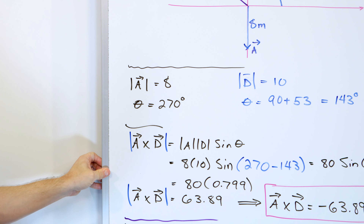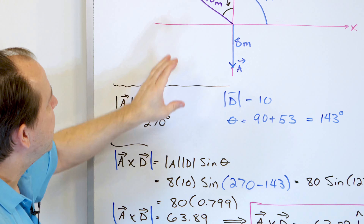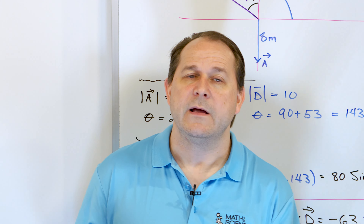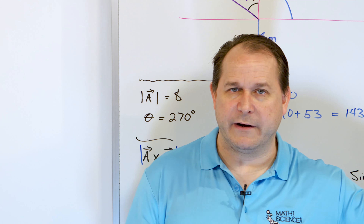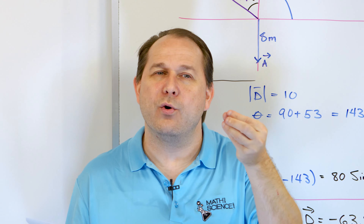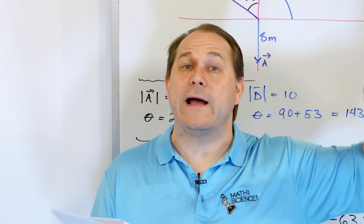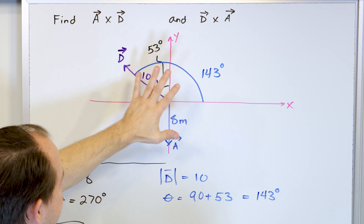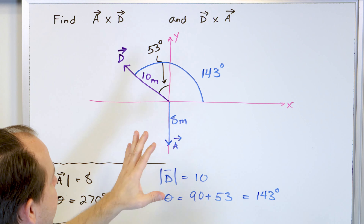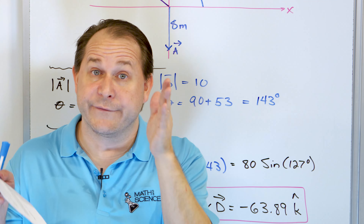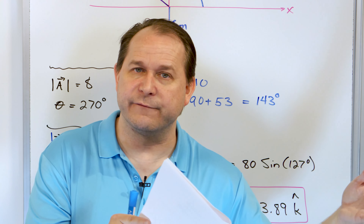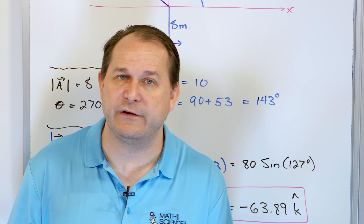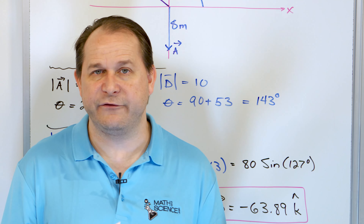Now since we've calculated this one way, let's take the same information and calculate the cross product using the determinant method to verify. To use that method, we need to write vectors A and D in unit vector notation — I, J, and K components. The diagram gives us directions, angles, and lengths, but not I-J-K notation, so we need to convert. Once we have it in the proper form and calculate the cross product, we should get the same answers.